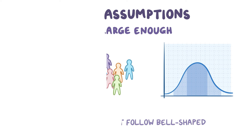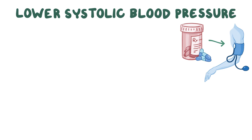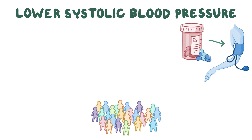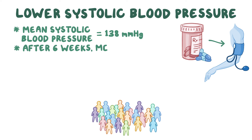Now let's say you want to figure out if a certain medication lowers systolic blood pressure. You measure 25 people's systolic blood pressure and find that the mean systolic blood pressure for the whole group is 138 mmHg. Then you give them the medication. To figure out if a decrease in systolic blood pressure from 138 to 130 is significant, we could perform a t-test.